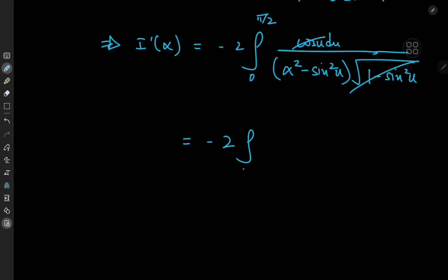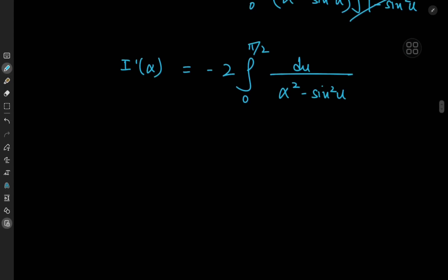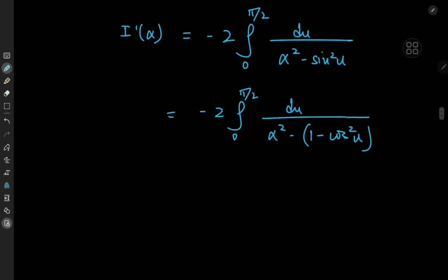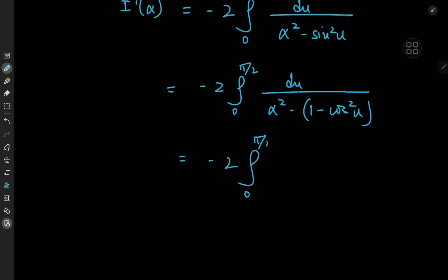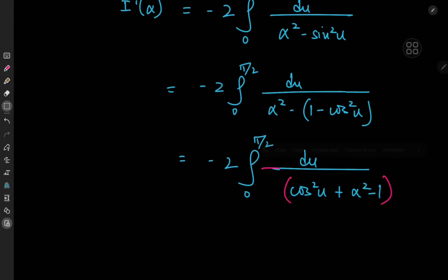We're now interested in -2 times the integral from 0 to pi/2 of du divided by (alpha² - sin²(u)). Rather than the Weierstrass substitution, we use a nicer approach: expand sin² as 1 minus cos²(u), giving the integral from 0 to pi/2 of du divided by (alpha² - 1 + cos²(u)). So we have -2 times the integral from 0 to pi/2 of du divided by (cos²(u) + alpha² - 1).